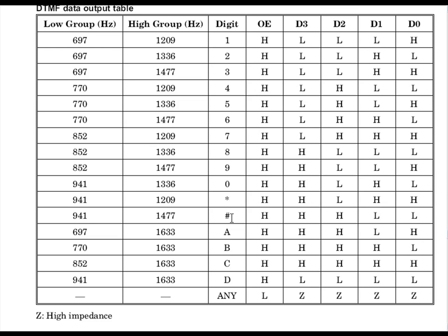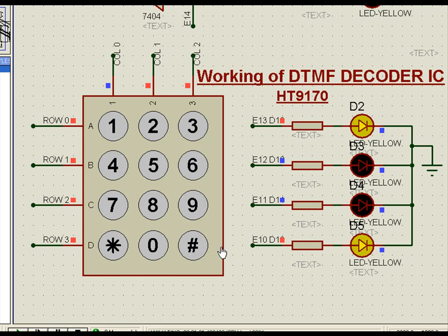For star it is like this, and for hash it is this way. And for A, B, C, D — if there is a matrix keypad which has got A, B, C, D also, that is a 4-column 4-line keypad. Here we are talking about a 3-column 4-line arrangement, and the output is found in this way — that is how the DTMF decoder IC is working.